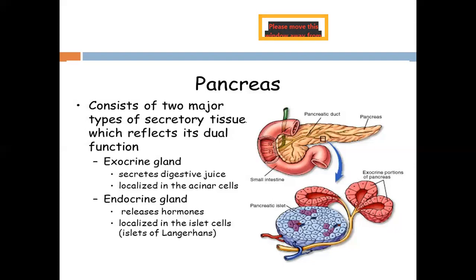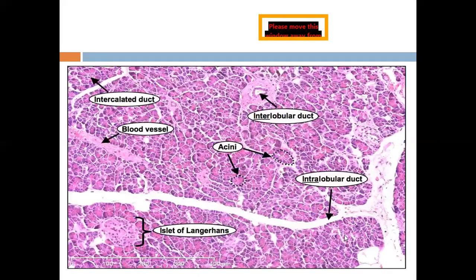The pancreas has both exocrine and endocrine secretion. The endocrine component of the pancreas is represented by the islets of Langerhans, which are diffused and separated among the exocrine secretory acini. Now we're going to go part by part.